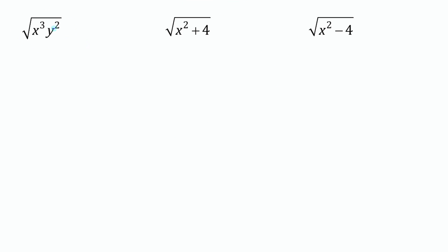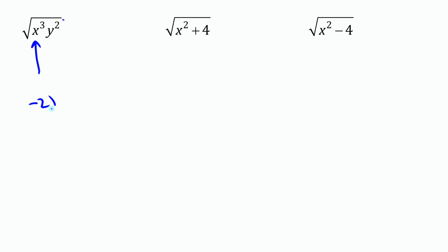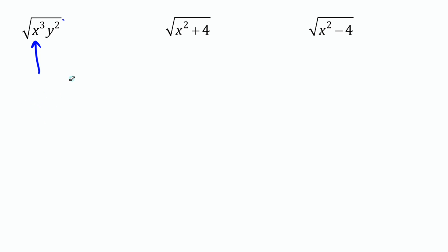We have two variables involved here, so let's think about the possible values for each. For y: because it's squared, any real number is fine — a positive squared is positive, a negative squared is also positive, and zero is fine too. So y can be any real number. For x: when you raise something to the third power, a positive number cubed is positive, zero cubed is zero, but a negative number cubed — like negative two cubed — is negative eight, which is not okay under a square root sign. So x has to be greater than or equal to zero, but y can be any real number.